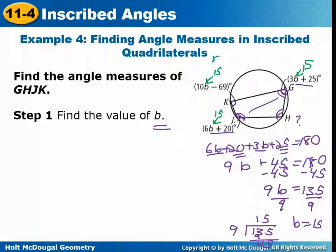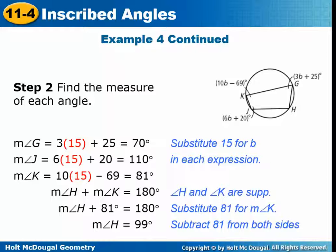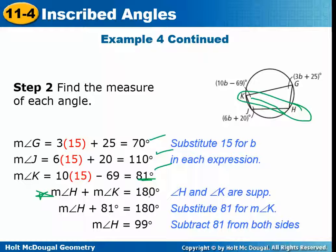You plug 15 in and find each angle — so 150 minus 69 and so on. For the angle with no expression, once you find the other three angles — 70, 110, and 81 — you can use the fact that opposite angles are supplementary: angle H plus angle K equals 180. Since K is 81, subtract to get angle H. Or subtract all three known angles from 360 to get the same answer.